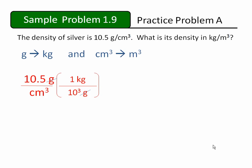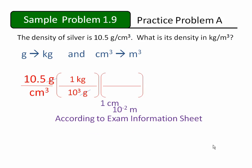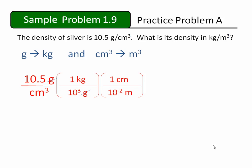Now let's look at the volume conversion. According to the exam information sheet, the relationship between centimeters and meters is that one centimeter is equivalent to 10 to the negative 2 meters. Placing these values into our solution correctly means that we must have centimeters in the numerator and meters in the denominator. This doesn't completely solve the problem, though.